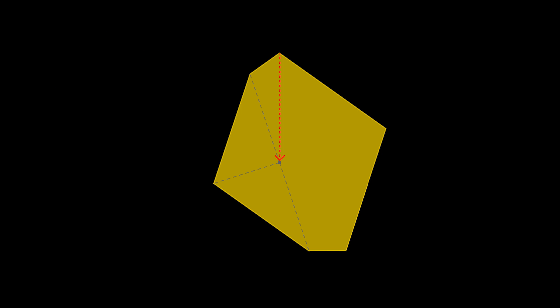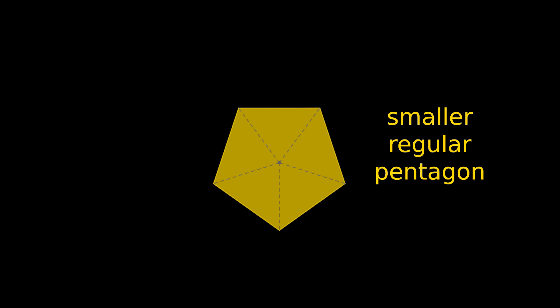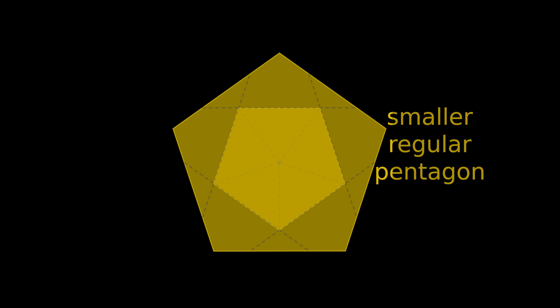If you take a regular pentagon and fold the vertices into the center, you'll get a smaller regular pentagon. But what might surprise you is that the ratio of the side lengths between the original pentagon and the smaller pentagon turns out to be the golden ratio.